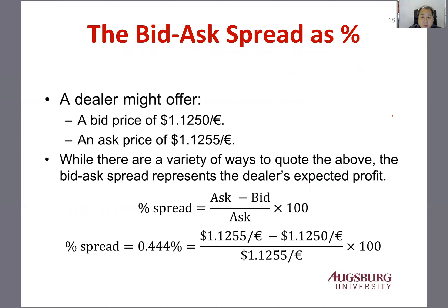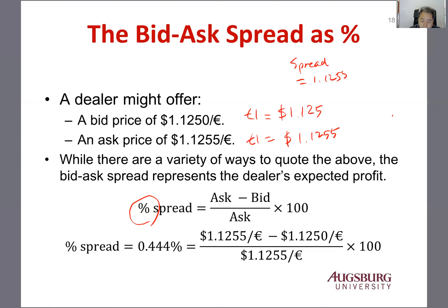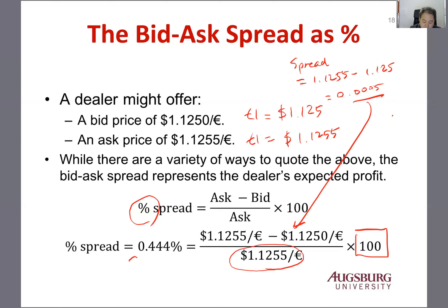So the dealers might offer quotes like this. If the bid price is 1.1250 euro per dollar — meaning 1 euro equals $1.1250 — that's a direct quote. And the ask price is 1.1255. So the spread is that difference, which is 0.0005. You divide by the ask price and times 100, and that gives you 0.044% — that's the percent spread, and it's easy to calculate.